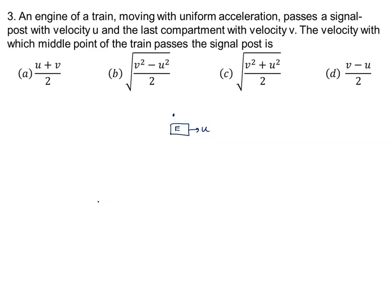The last compartment has velocity v. Let's say the length of the train is l. This is the last compartment when it is passing through the same pole, having velocity v.